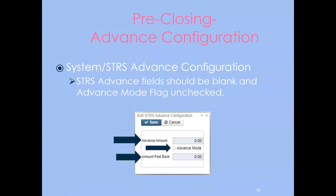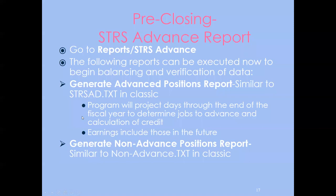Under System, go to the STIRS advance configuration option and verify that the advance mode box is unchecked. Most districts should already have it unchecked, but double-check. When that box is unchecked, it automatically clears any amounts to zero. If you check the advance mode box back on, it will show any remaining amount — but as long as it stays unchecked before the new fiscal year, it won't add to incoming amounts.